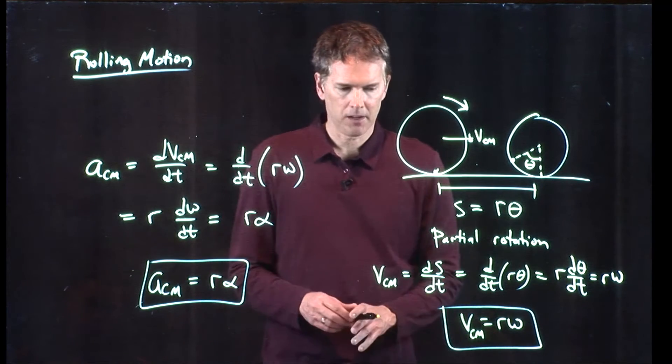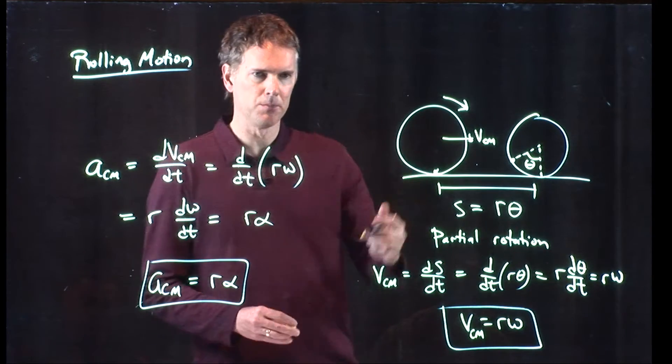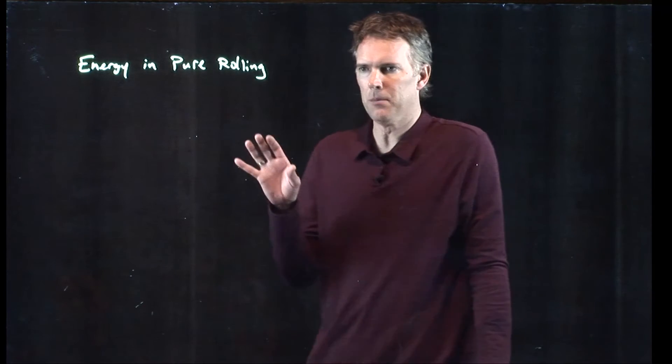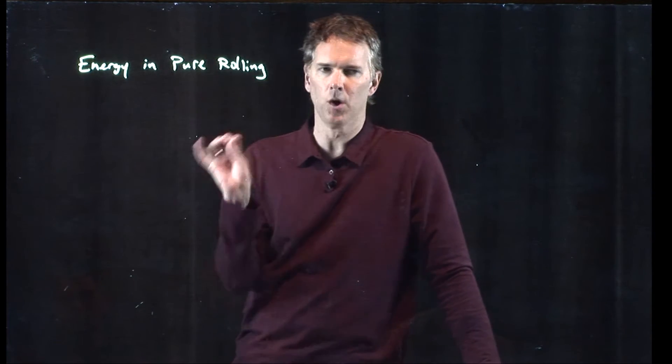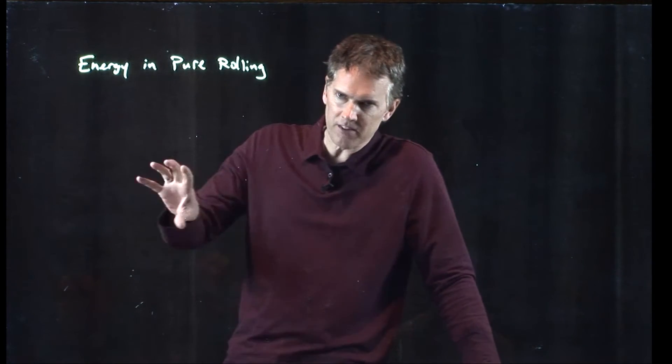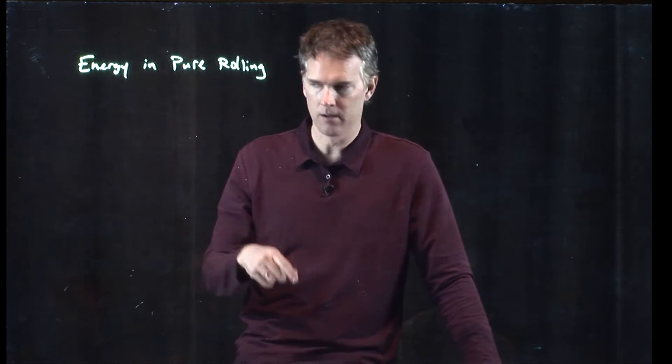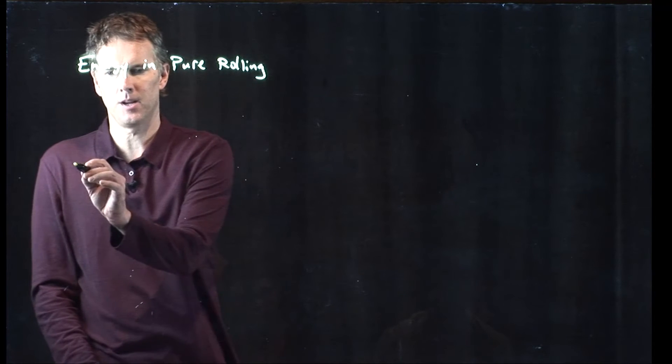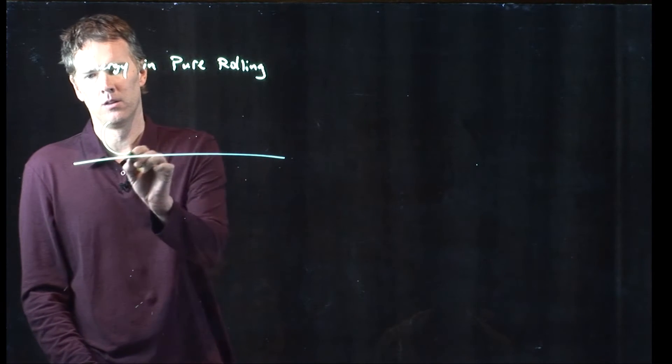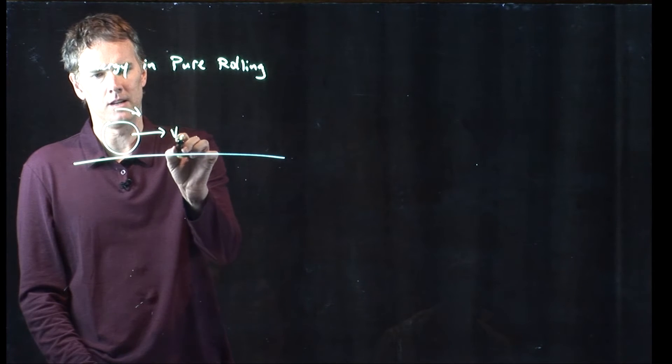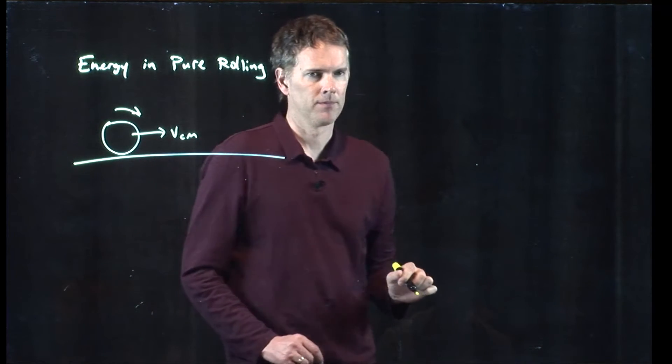And now let's think about how much energy you might have in a rolling wheel. Let's talk about the energy in pure rolling. Pure just means no slip. The wheel isn't sliding relative to the ground, it's always sticking to the ground. So here's our object, a wheel that's rolling along with some velocity center of mass as it goes.